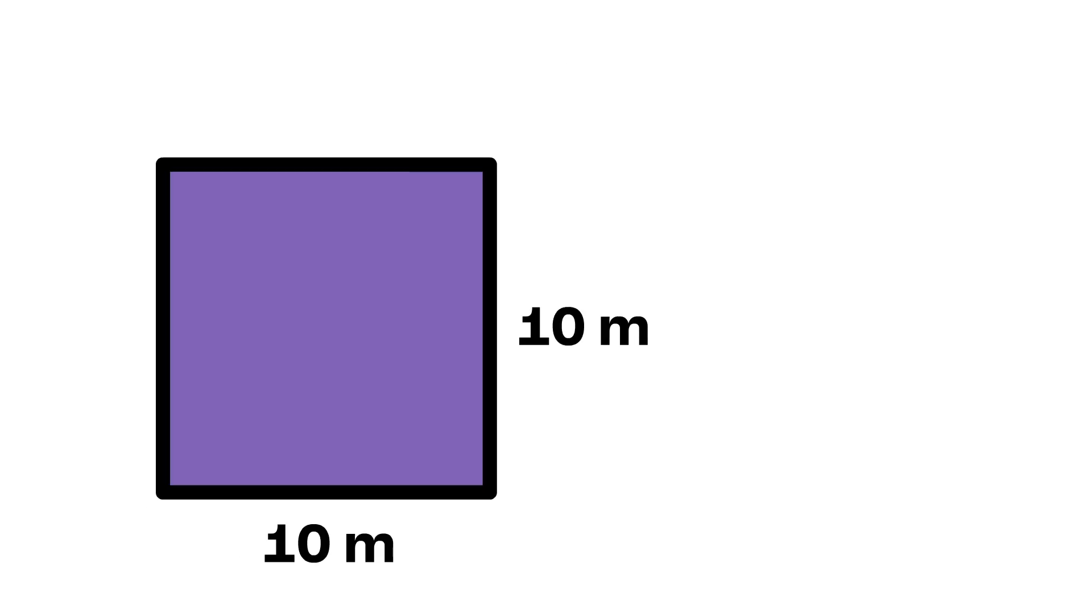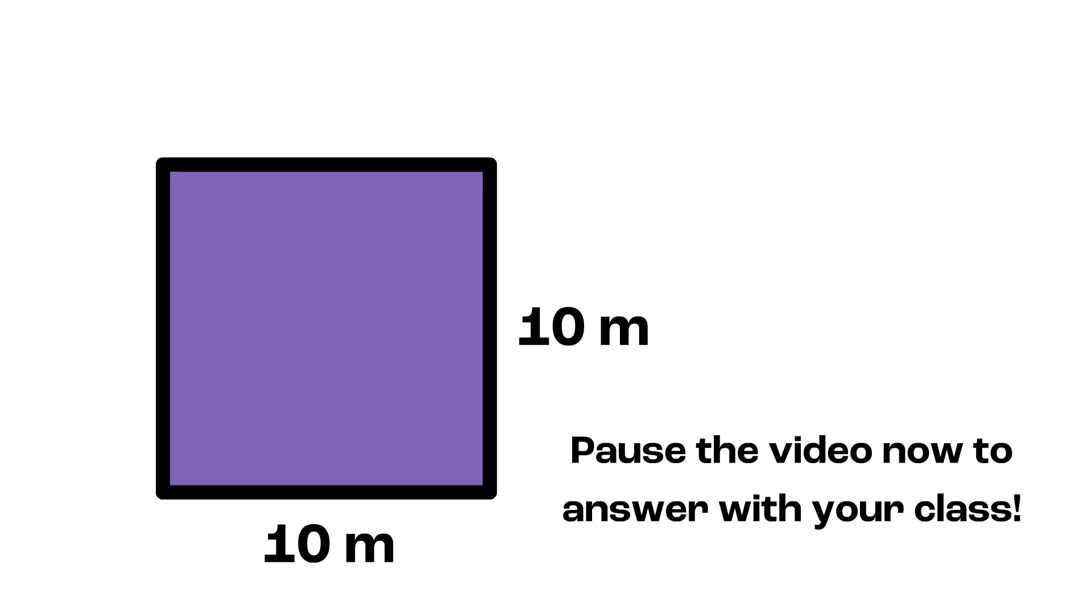Okay, let's do one more example. Pause the video now to answer with your class. This shape looks like a square, and I am certain that it's a square because the side lengths that we are given are also equal.